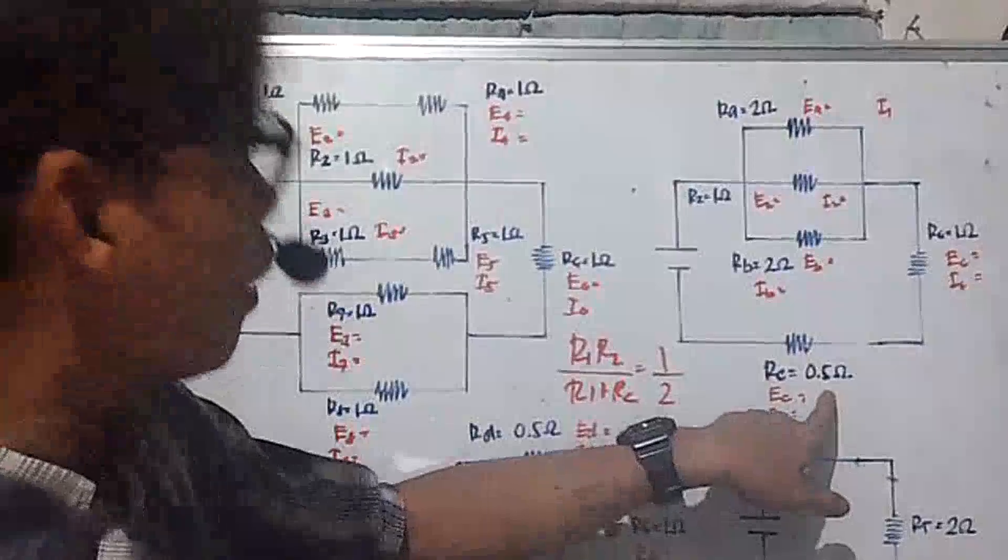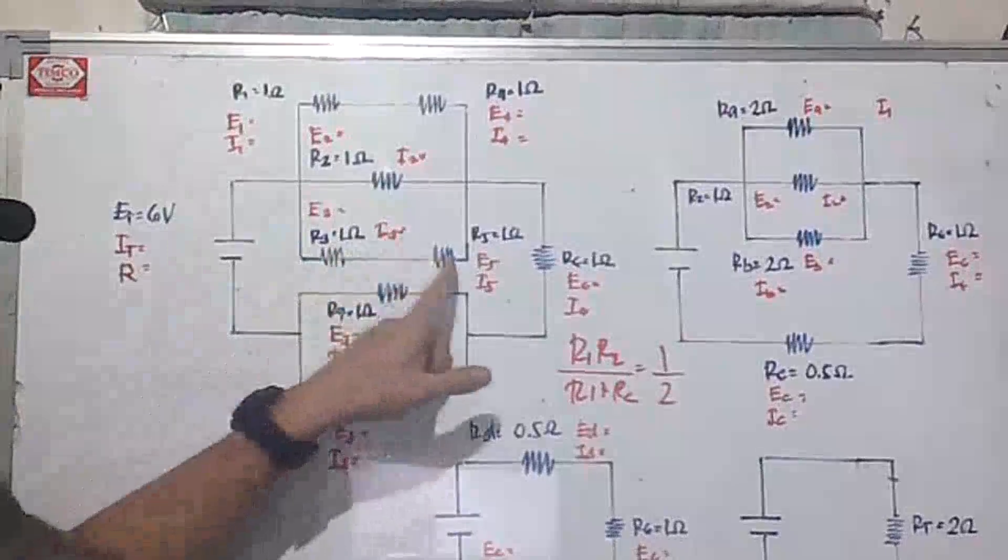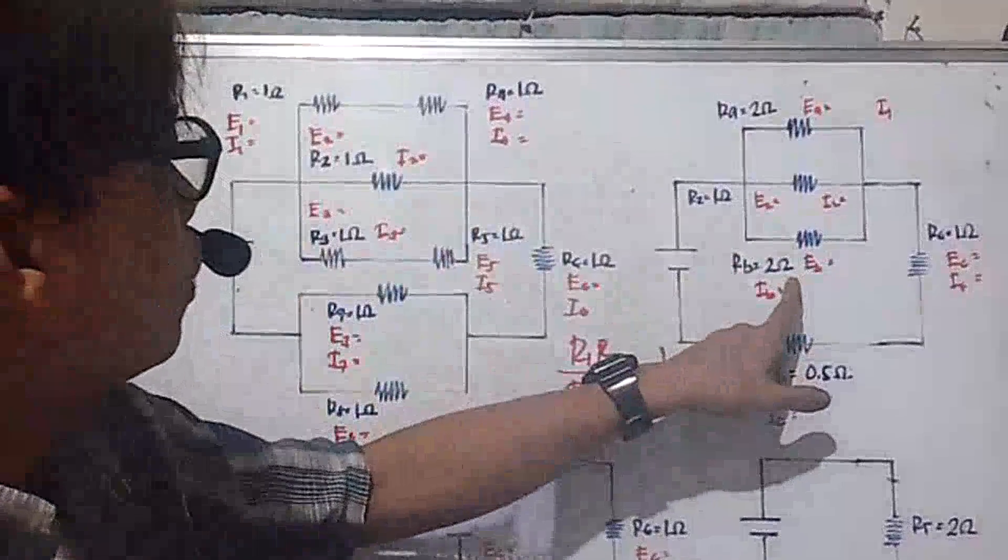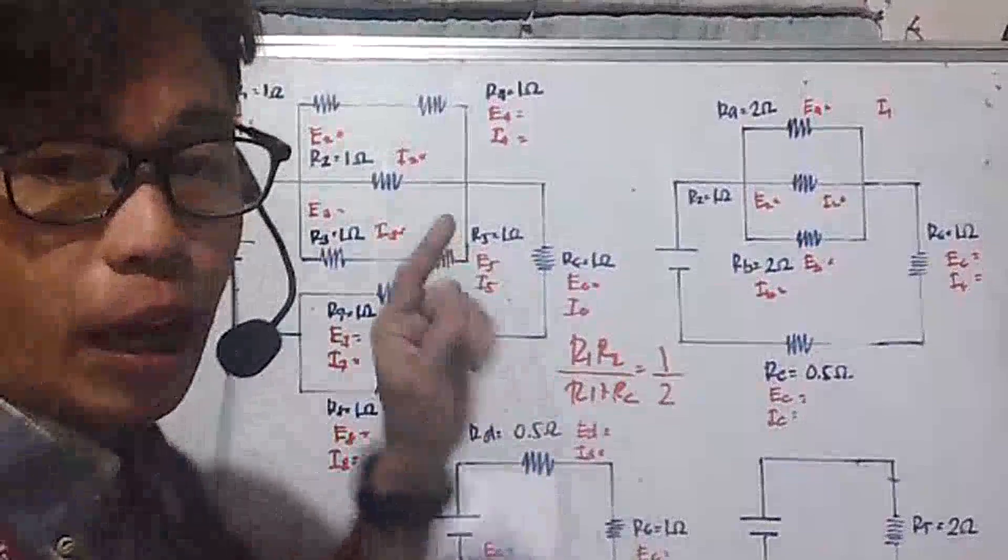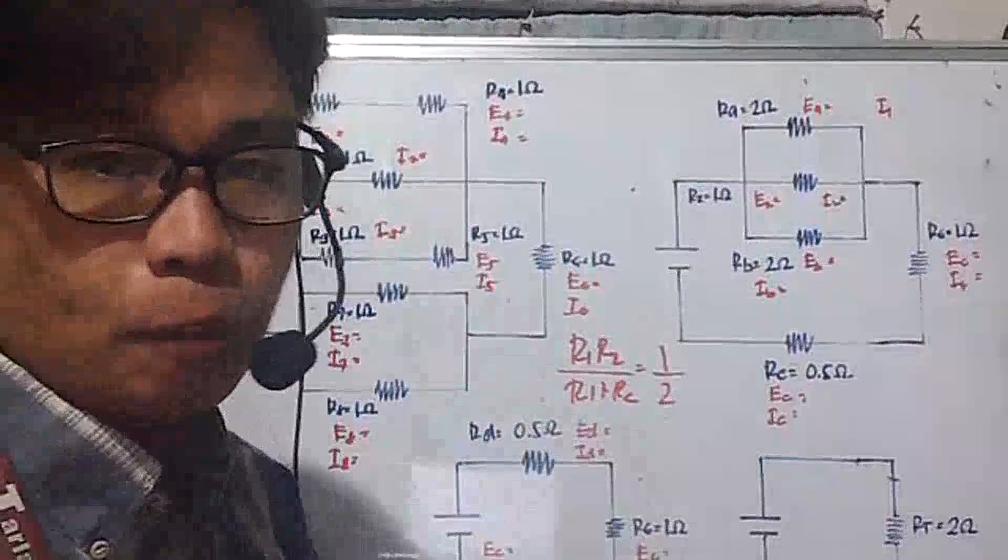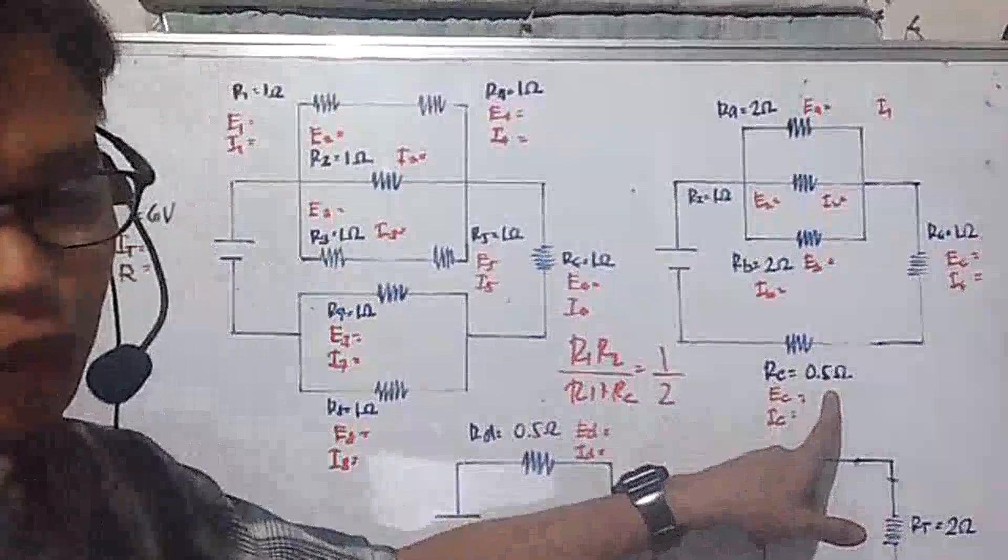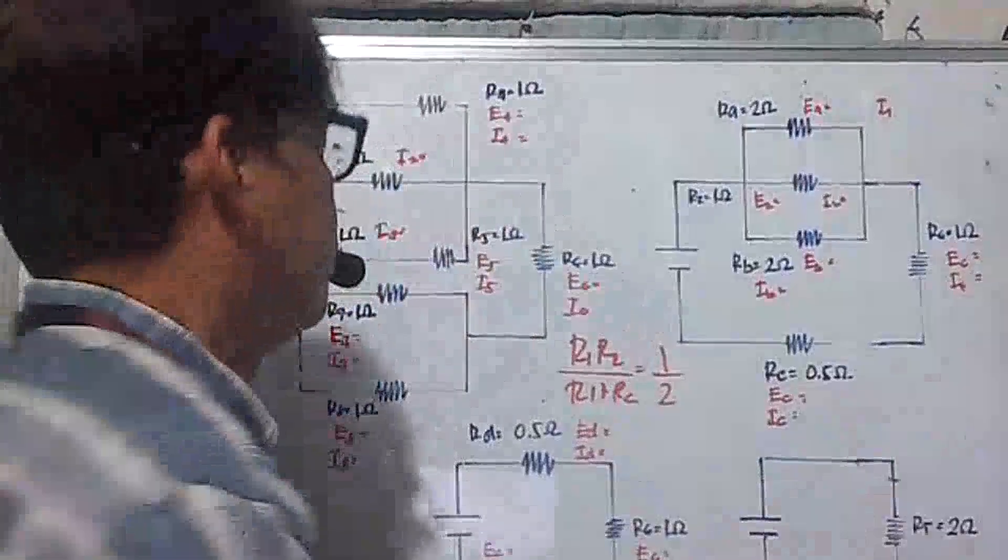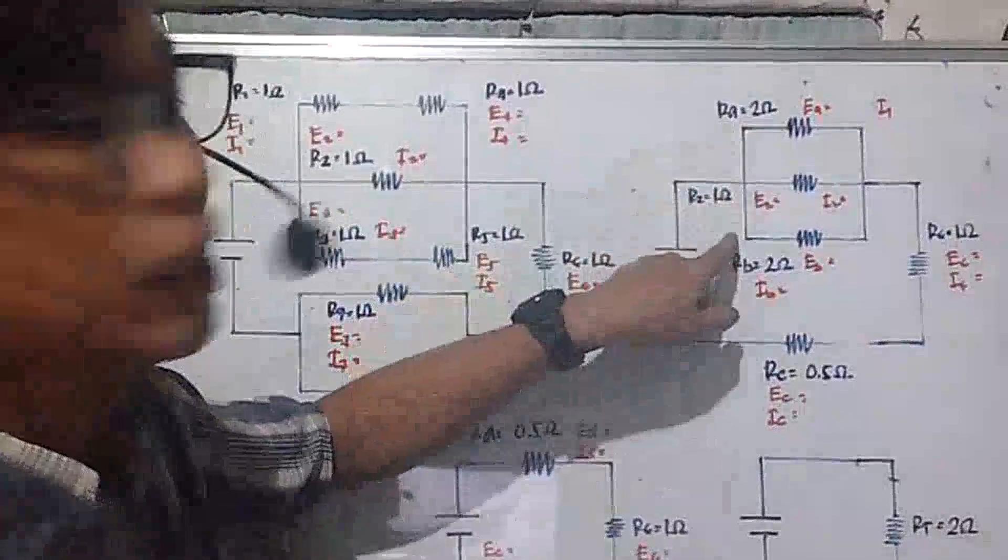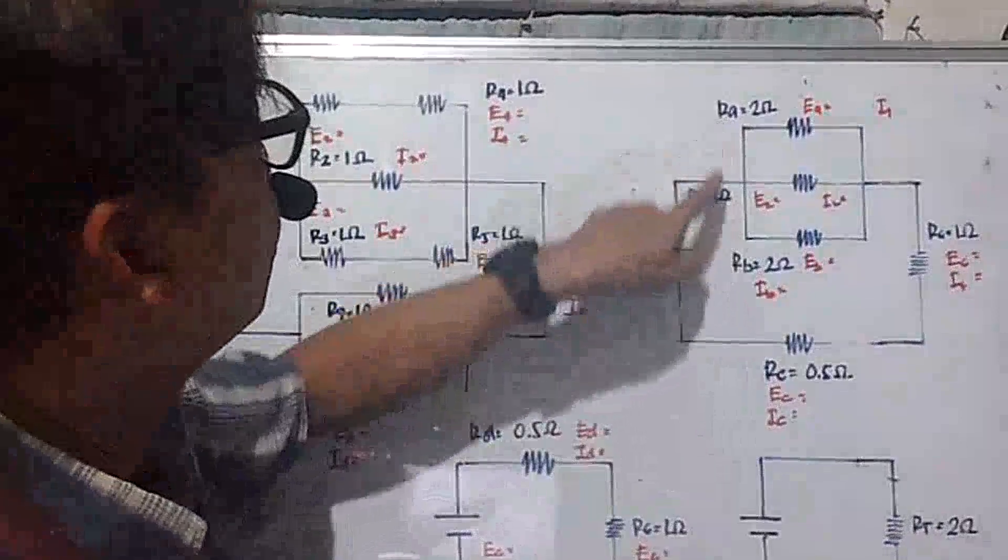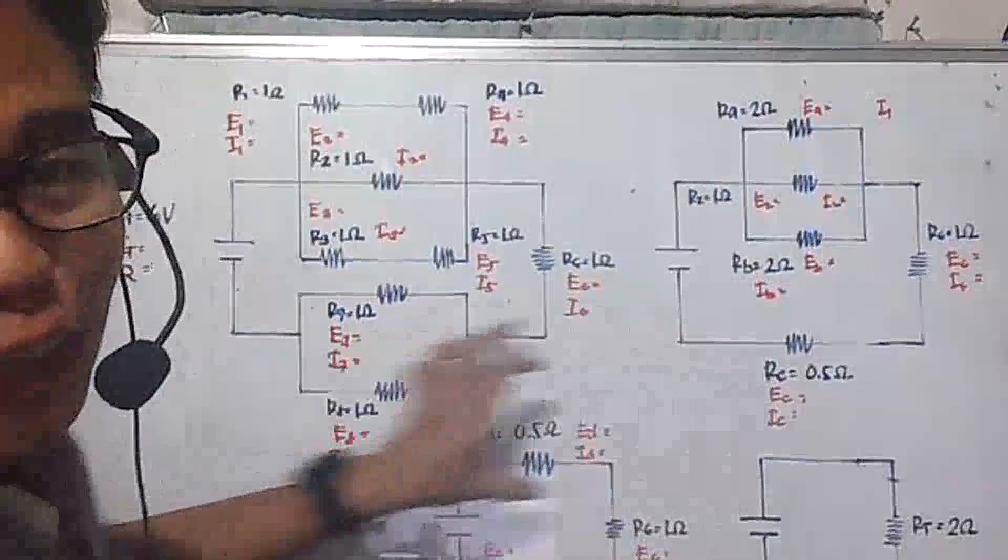So your Rc will be the summation of R7 and R8, that is 0.5. Your Ra is the summation of R1 and R4, that is 2. And your Rb is the summation of R3 and R5, which is 1 and 1, that equals 2. Now these two, since they are not added, they are in parallel combination. So you're going to use this formula, R1 times R2 divided by R1 plus R2.